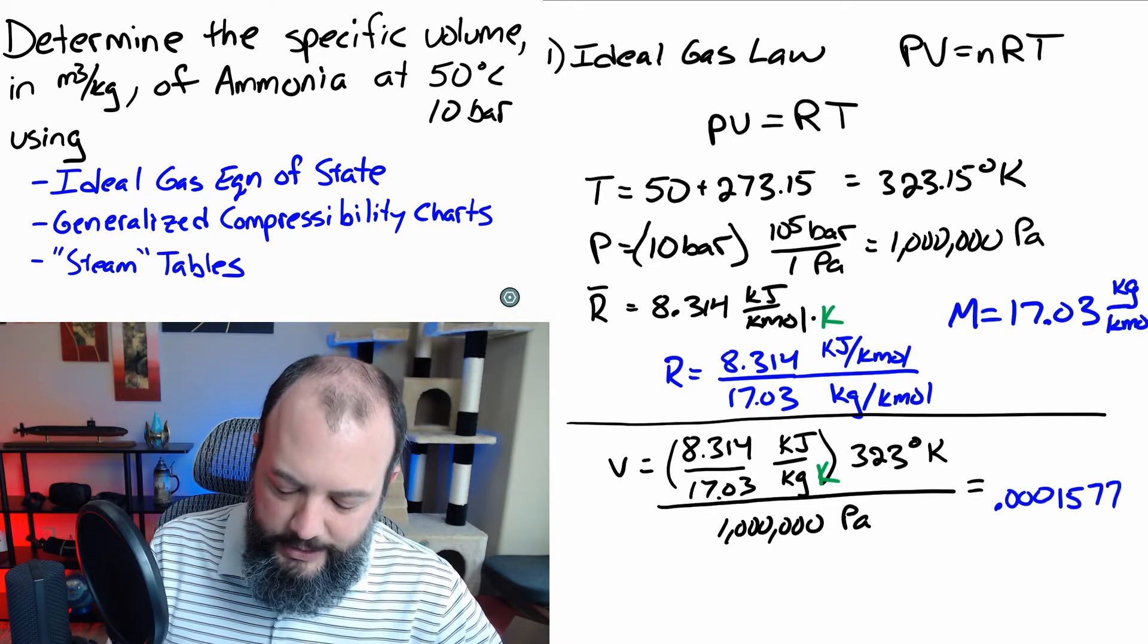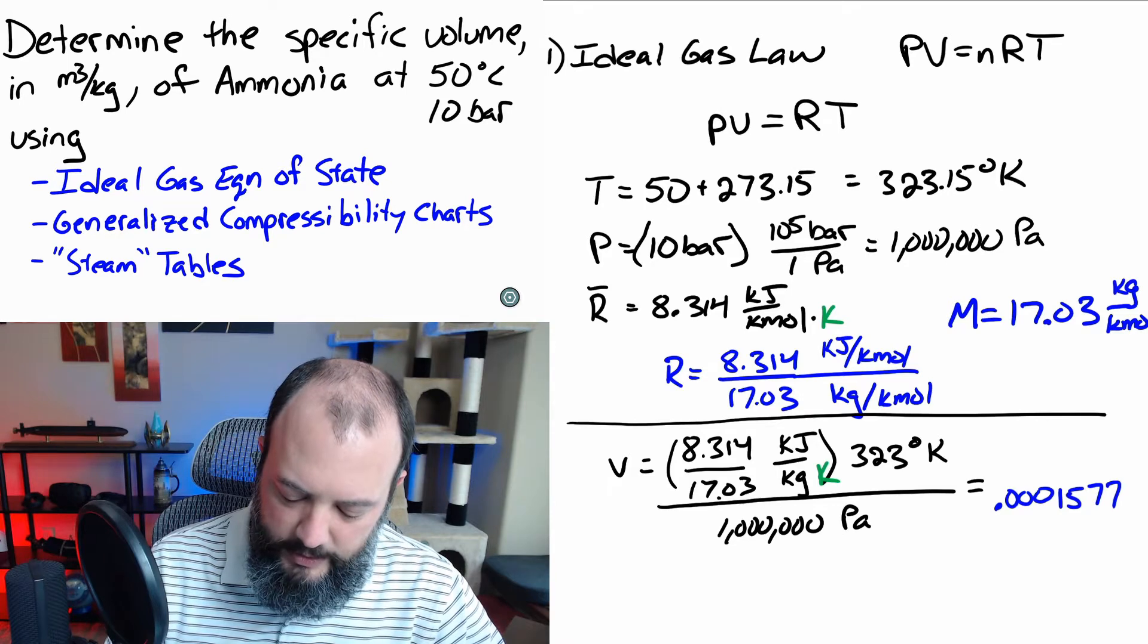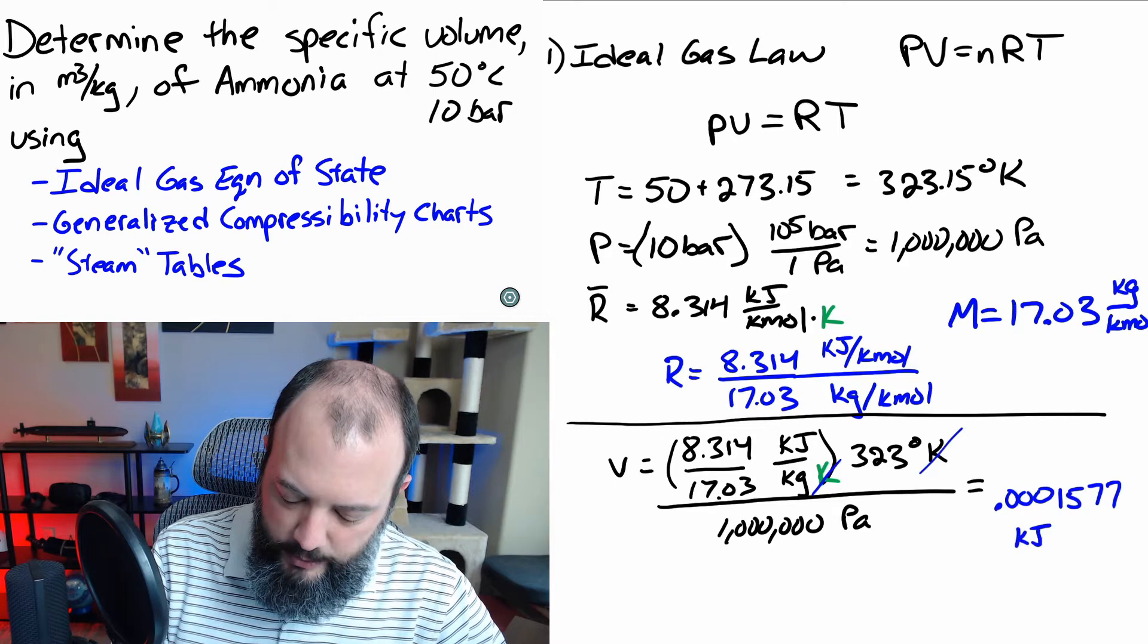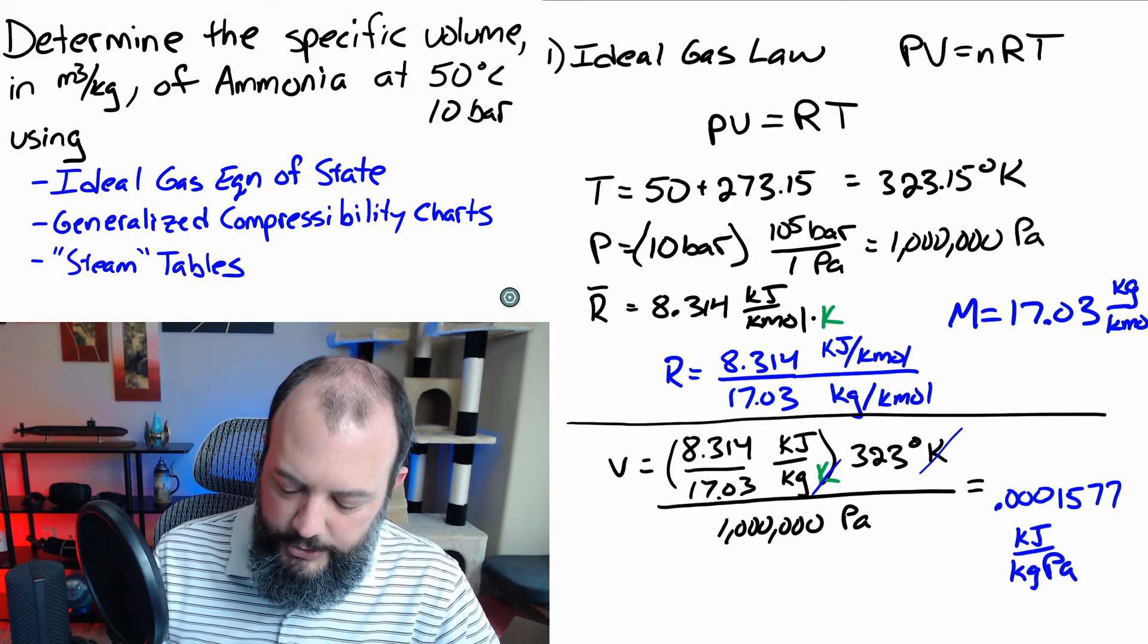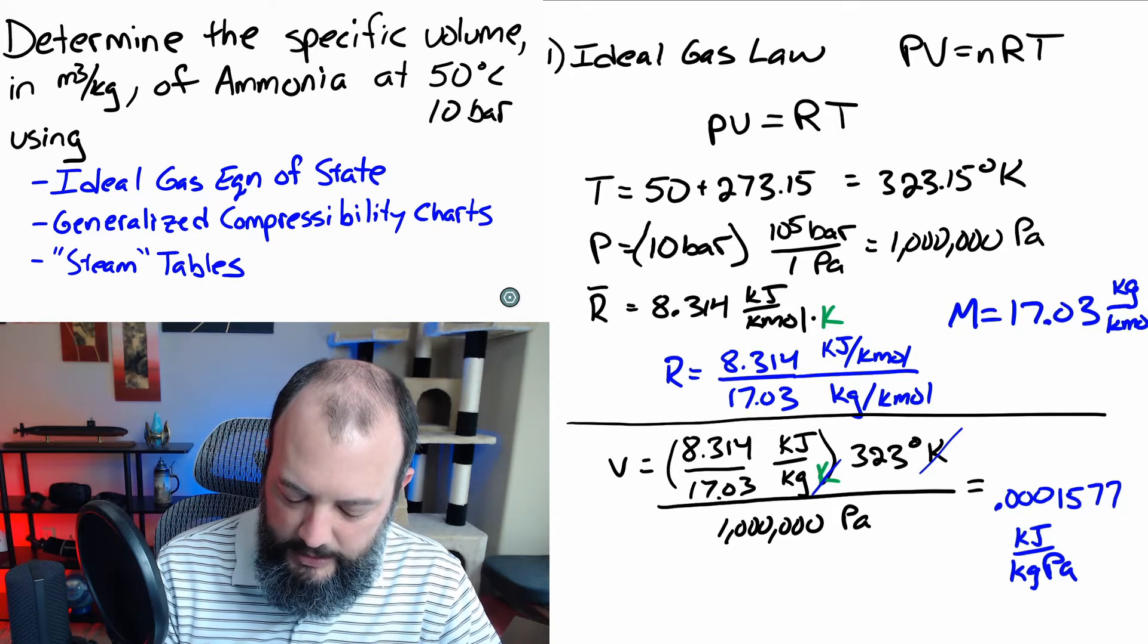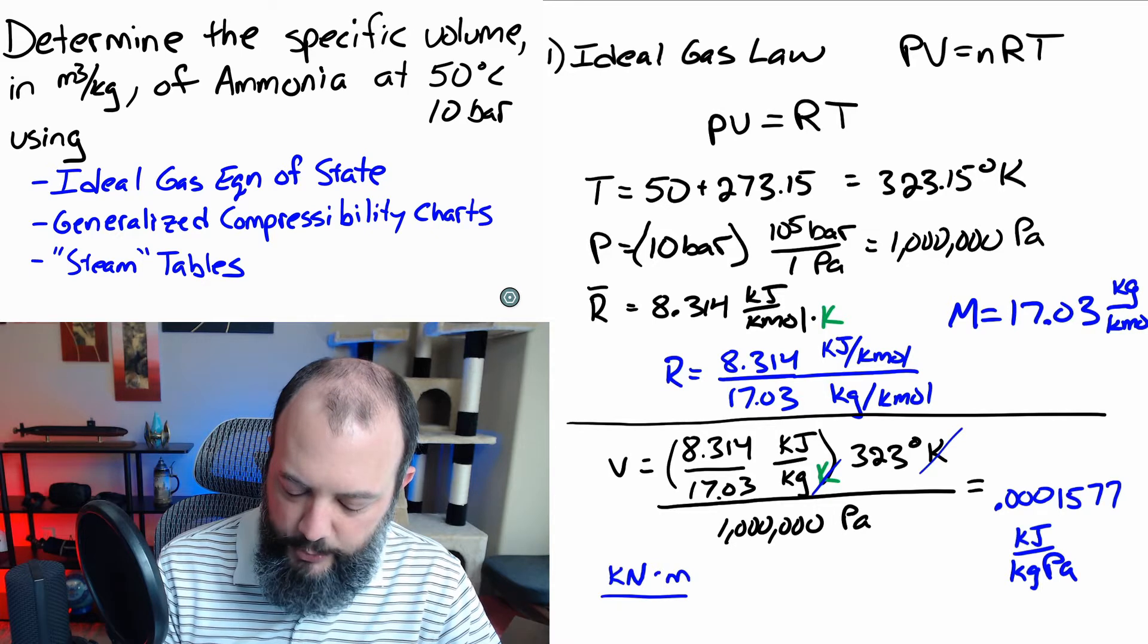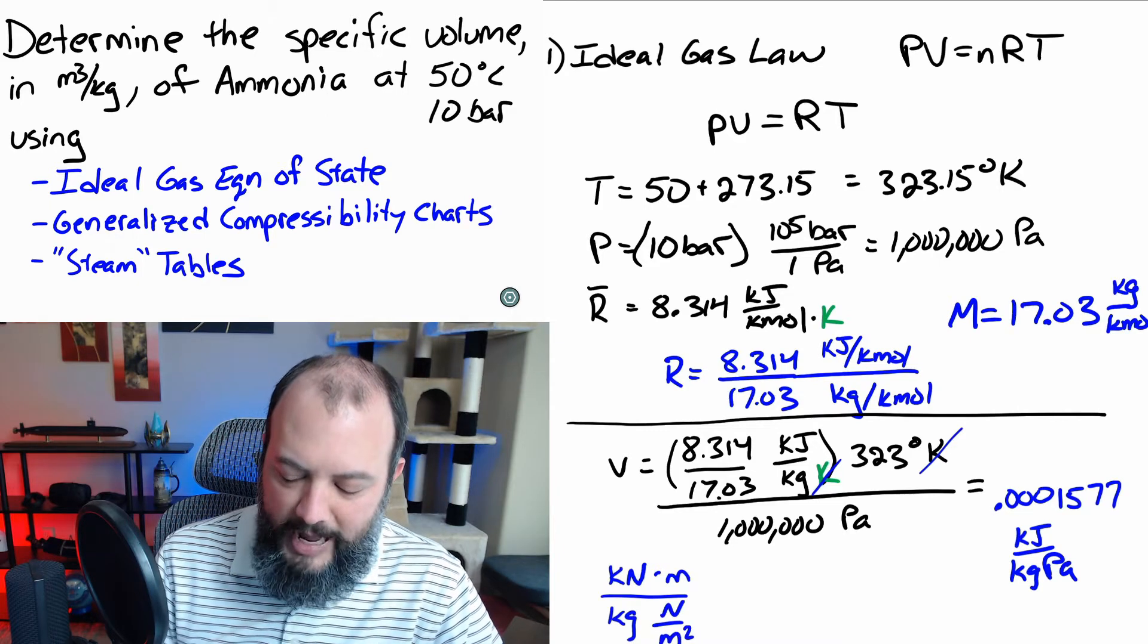So, I get a numerical answer here of 0.0001577. When I take a look at the units, see the Kelvin cancels, and I'm left with kilojoules per kilogram Pascal. So, when I convert the joules and Pascal back in terms of Newtons, this will make it easier to see that these units don't actually cancel out. So, a kilojoule is going to be a kilonewton times meter. You still have kilogram in the denominator, and a Pascal is a Newton per meter squared. So, the kilonewtons and Newtons are not going to cancel.